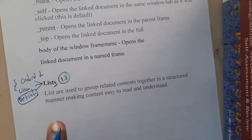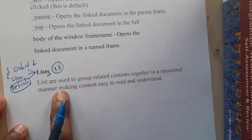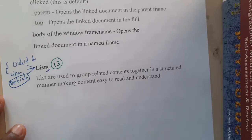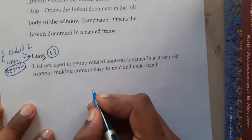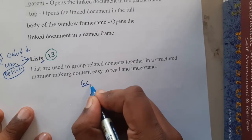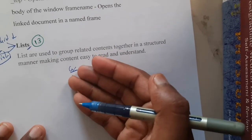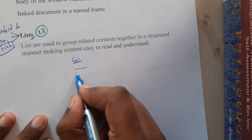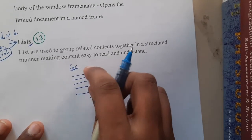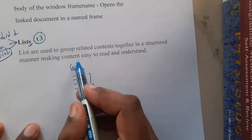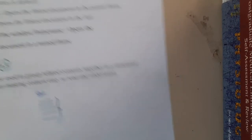Lists are used to group related content together in a structural manner, making content easy to read and understand. For example, assume you want to buy groceries and there are 20 items to bring — you'll make a list: item 1, item 2, item 3... This makes your life easy and the content easy to read and understand. That is the main goal of lists.